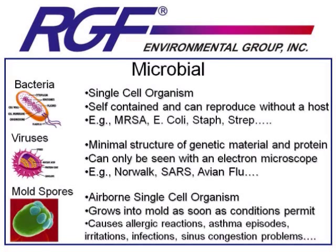Mold spores are also classified in the microbial category. To better understand mold spores, we need to understand the life cycle of mold. Mold growing on a wall is called a mold colony. As the mold colony grows, it releases single-celled organisms called mold spores into the air. When conditions permit — something damp, high temperature, or no light — these mold spores will grow into new mold colonies, which will release more spores into the air.